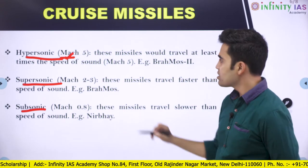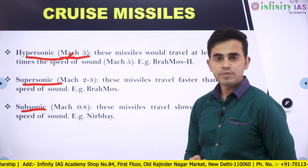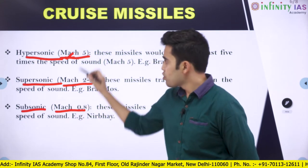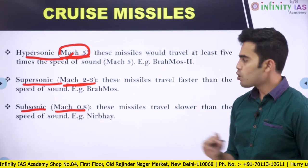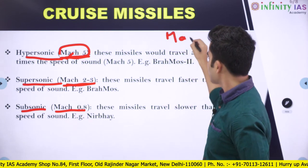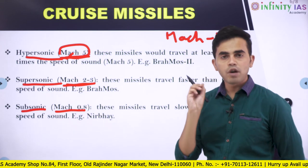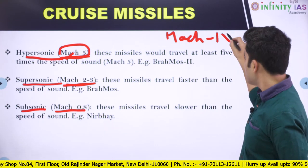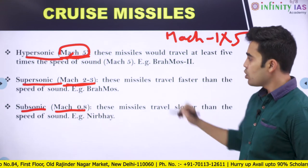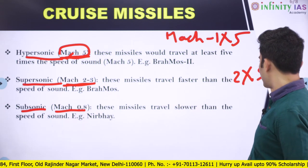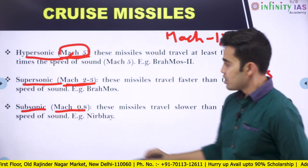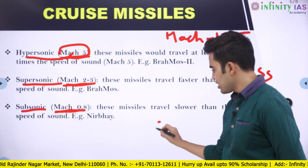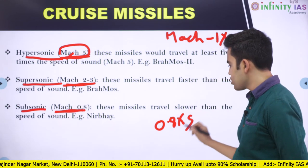Hypersonic cruise missiles can travel at Mach 5, supersonic at Mach 2 to Mach 3, and subsonic at Mach 0.8. Mach 1 is the speed of sound, so Mach 5 means five times the speed of sound, Mach 2 or 3 means two or three times the speed of sound. Subsonic at Mach 0.8 means it travels lower than the speed of sound — only 0.8 times the speed of sound.